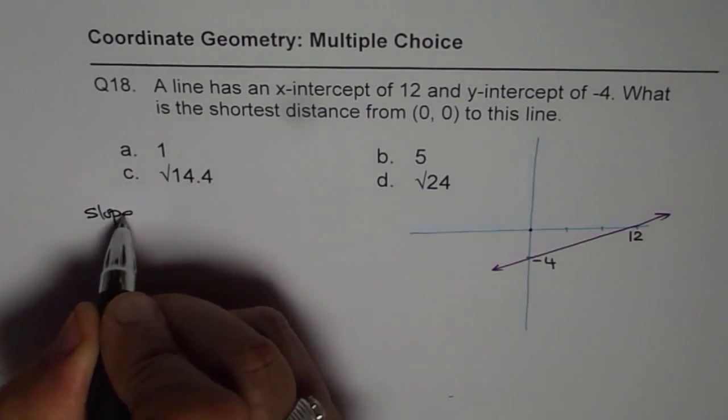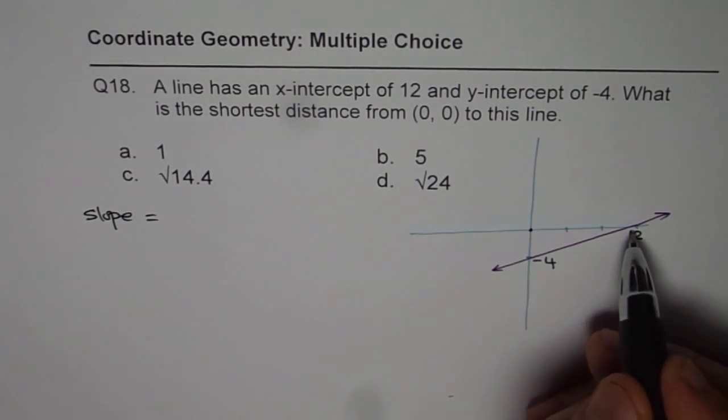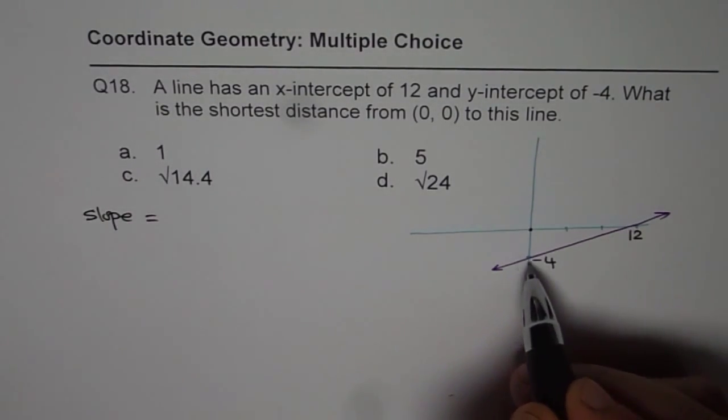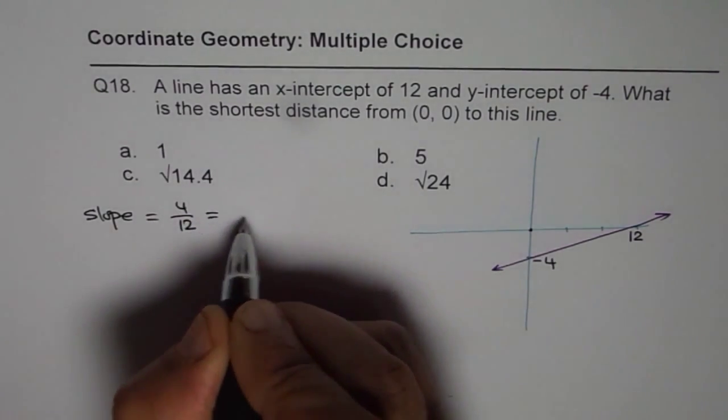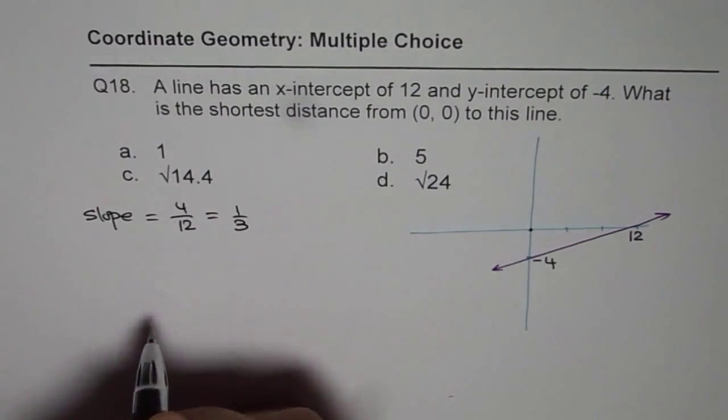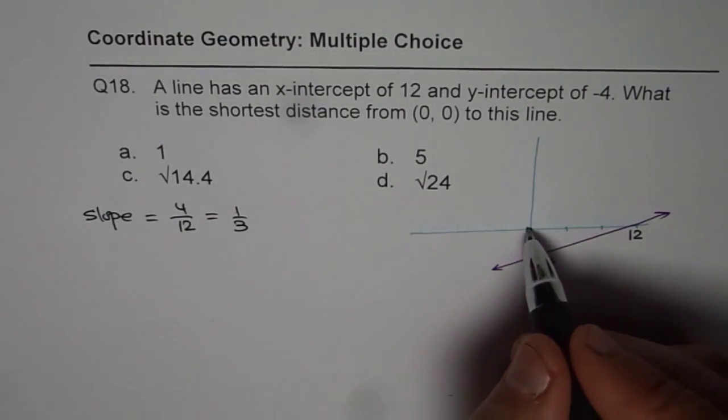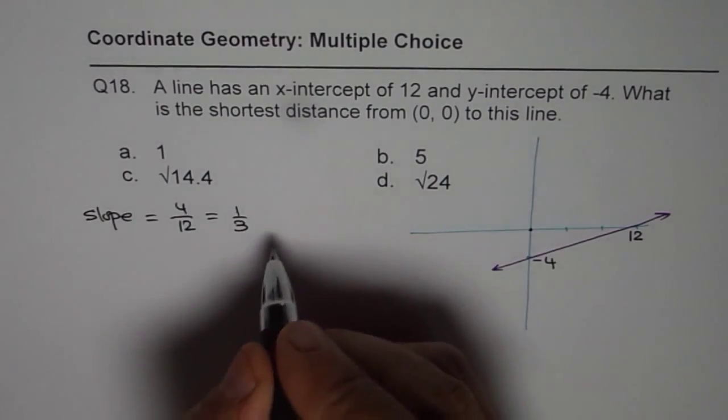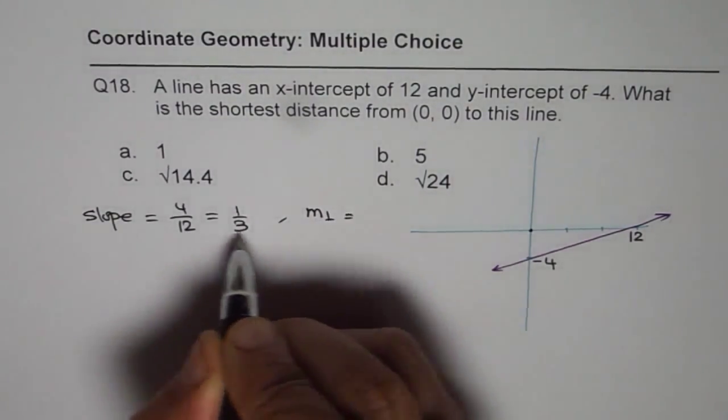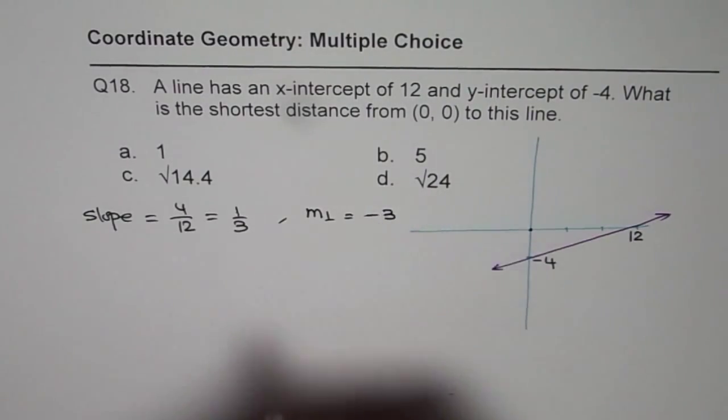The slope of given line is rise over run which is in this case 4 over 12, which is 1 over 3. Now the perpendicular slope will be negative reciprocal. So it is minus 3.